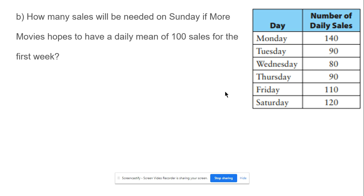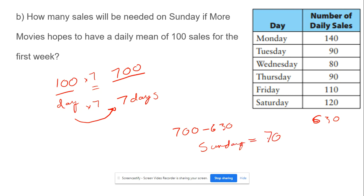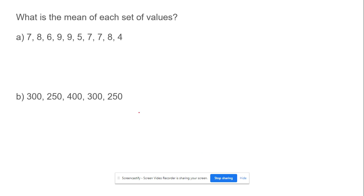Part B: How many sales will be needed on Sunday if More Movies hopes to have a daily mean of 100? If we want the mean to be 100 per day, and there are 7 days total, we multiply by 7. So 100 times 7 equals 700 total sales needed. We already have 630 sales. So 700 minus 630 means we need 70 sales on Sunday to average 100 per day.